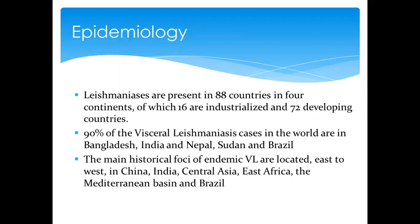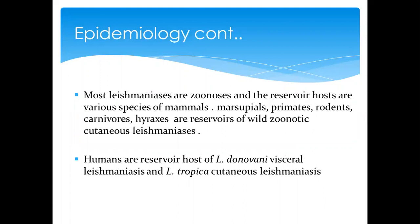In terms of distribution, leishmaniasis is present in many countries. Ninety percent of the visceral type is found in Bangladesh, India, Nepal, parts of Sudan, and Brazil. The main historical endemic focus includes parts of China and India, which has been affected by this disease for a very long time.